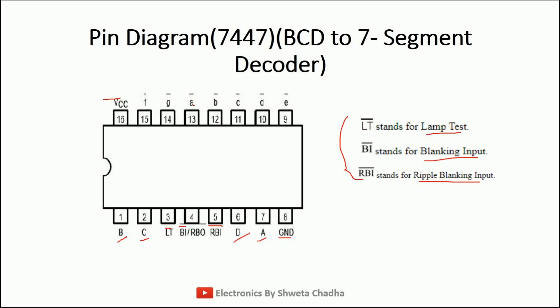Afterwards, we have the output signals: A, B, C, D, E, F, and G. A bar is mentioned on all these pins, which means all these pins are active low pins. Active low means we will be receiving a 0 as the output signal. PINs 1, 2, 6, and 7 will be connected with QA, QB, QC, and QD from 7490. PINs 3, 4, and 5 — the testing pins — we are not going to use any connections here.